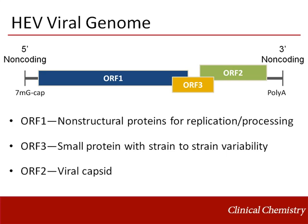Next in sequence is ORF3, which encodes a small protein that has significant variability between strains, and its specific function is unknown. In vitro studies suggest that it is important in promoting cell survival. The protein is expressed on the viral surface, so now it is being incorporated into serologic assays for hepatitis E.